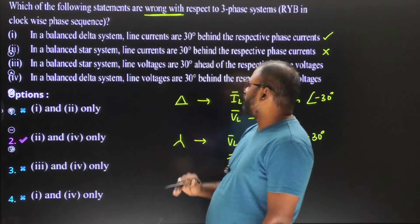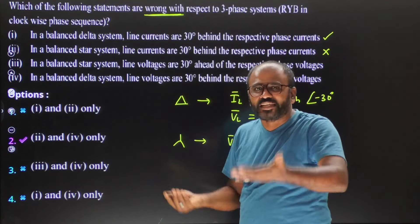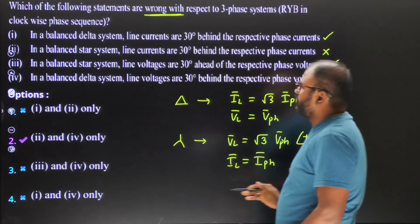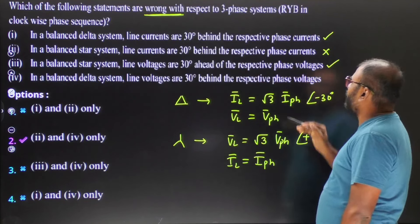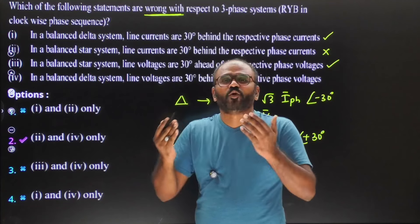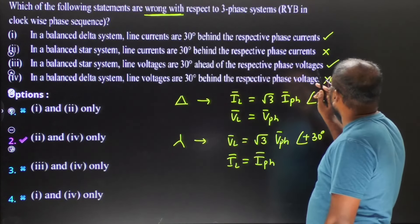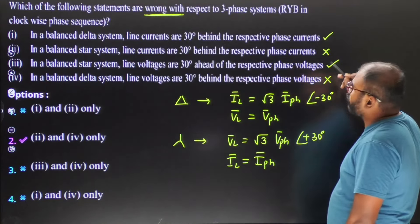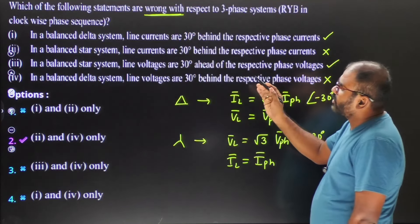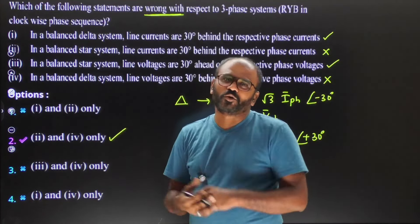Statement three says: in a balanced star system, line voltages are thirty degrees ahead of respective phase voltages — 'ahead' means leading, so line voltage leads phase voltage by thirty degrees. That is correct. Statement four says: in a balanced delta system, the line voltages are thirty degrees behind the respective phase voltages — but in delta connection, line voltage and phase voltage are the same and in phase, so this is incorrect. Statements one and three are correct; statements two and four are wrong. The answer is two and four.